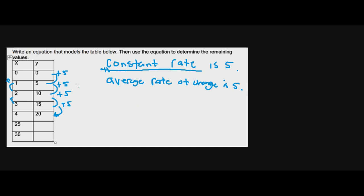Well, what's the shortcut for addition? Multiplication. So how can we write an equation for this? Well, y is equal to - what's the number that we're always adding by? Well, that's 5 times x. Y is equal to 5x.